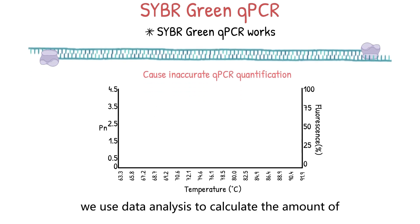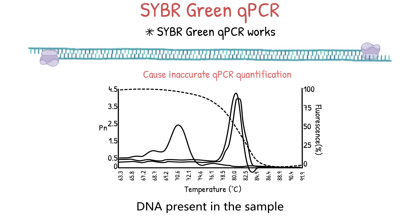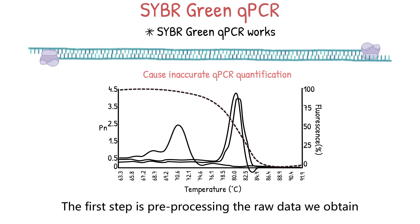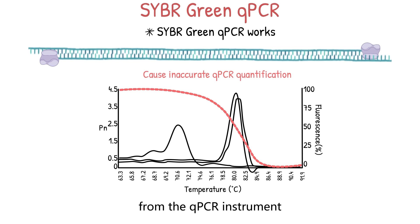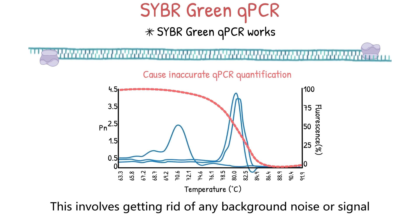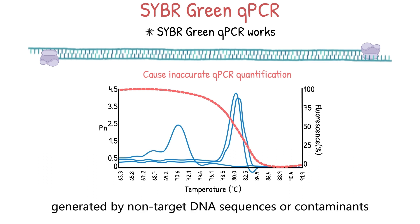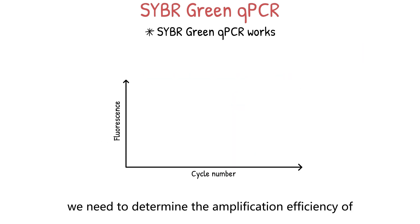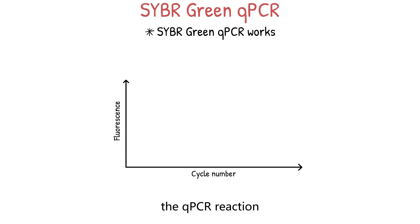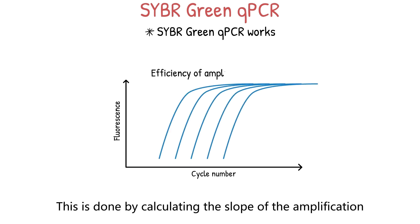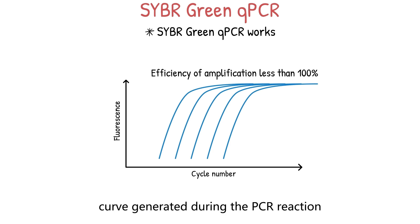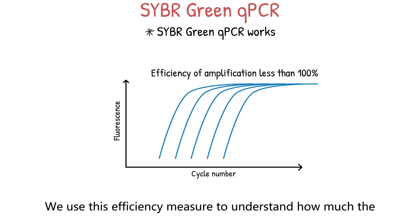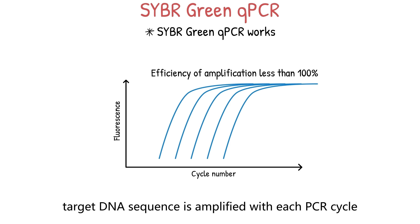For data analysis, we use it to calculate the amount of DNA present in the sample. The first step is pre-processing the raw data from the qPCR instrument, which involves removing background noise or signal generated by non-target DNA sequences or contaminants. Next, we determine the amplification efficiency of the qPCR reaction by calculating the slope of the amplification curve, which tells us how much the target DNA sequence is amplified with each PCR cycle.